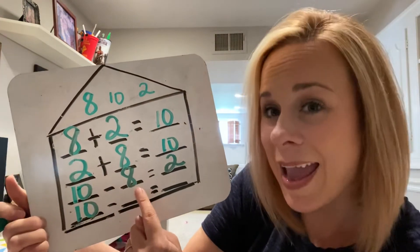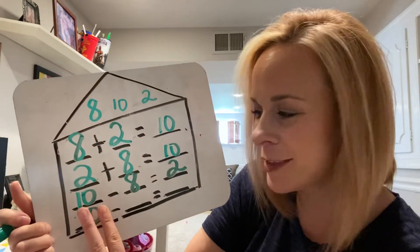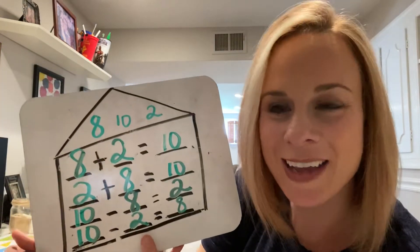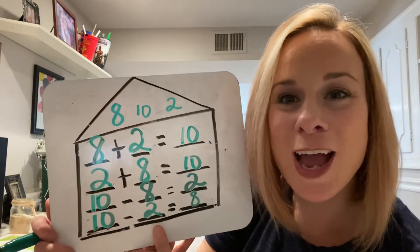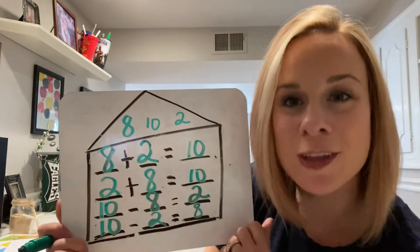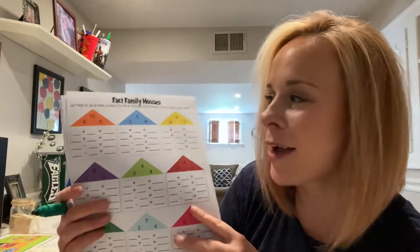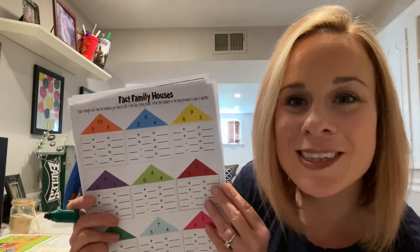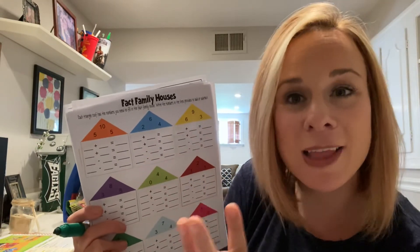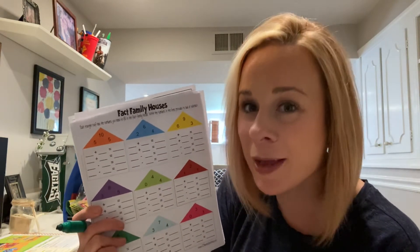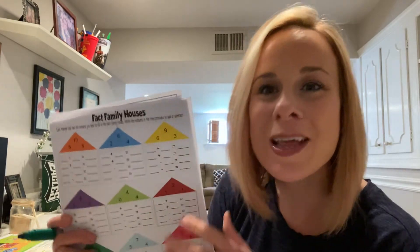If we know that 10 minus eight equals two, then what else do we know? We can't use eight the same way, so let's switch them: 10 minus two equals eight. That is another true subtraction sentence. This is known as a fact family because all three numbers are related in a way to form addition and subtraction sentences. This week you're going to get a packet of fact families at home. You'll look at the roof, see the three related numbers, and remember: in an addition sentence the whole is biggest and comes last, but in a subtraction sentence that biggest number comes first. Have fun solving these fact families!